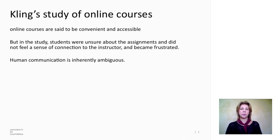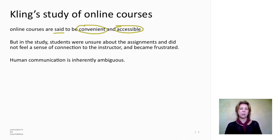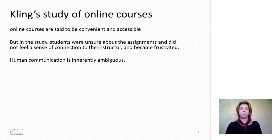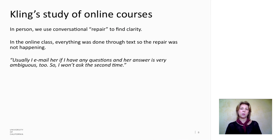Kling did a study of online courses, and I wanted to mention that since we are together here in an online course. He noted that online courses are said to be convenient and accessible, and that is certainly true. But if you look at what actually happens, sometimes there are problems that possibly could have been anticipated. In the course that he studied, the students felt pretty disconnected from the instructor, and there was a lot of confusion and frustration. Kling pointed out that this was actually fairly predictable, in that human communication is inherently ambiguous. In person, we deal with this through a process that linguists call repair — if I say something and you don't understand it, you just say, what did you mean by that? And then we continue our conversation. This is a lot more difficult in an online course.